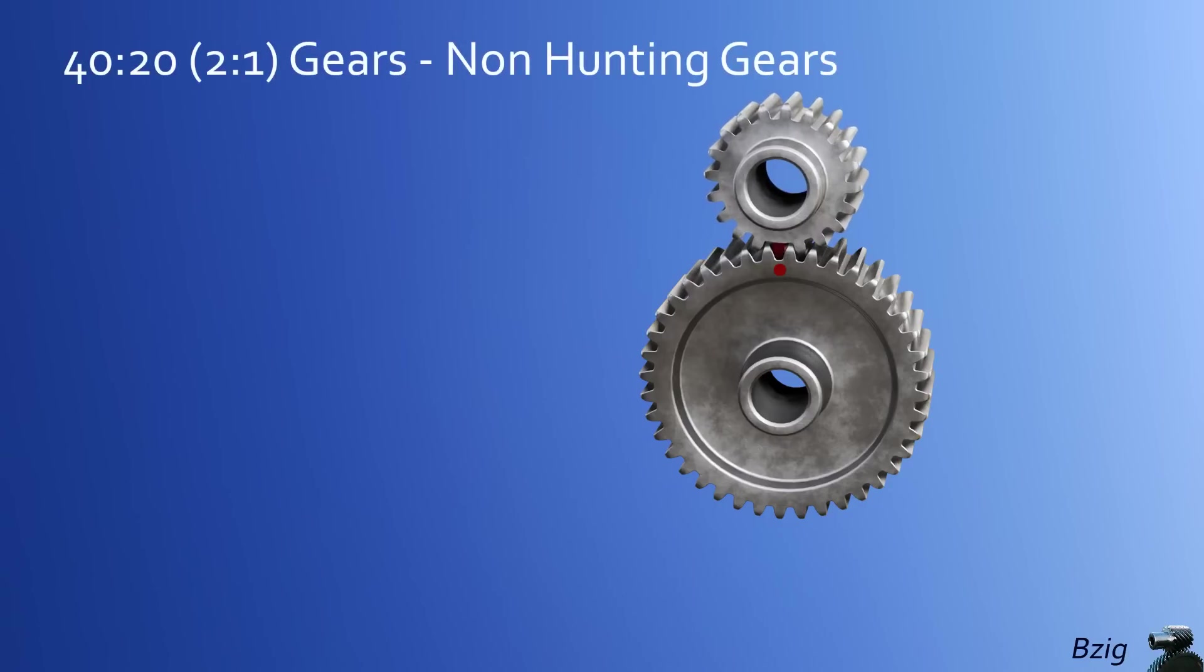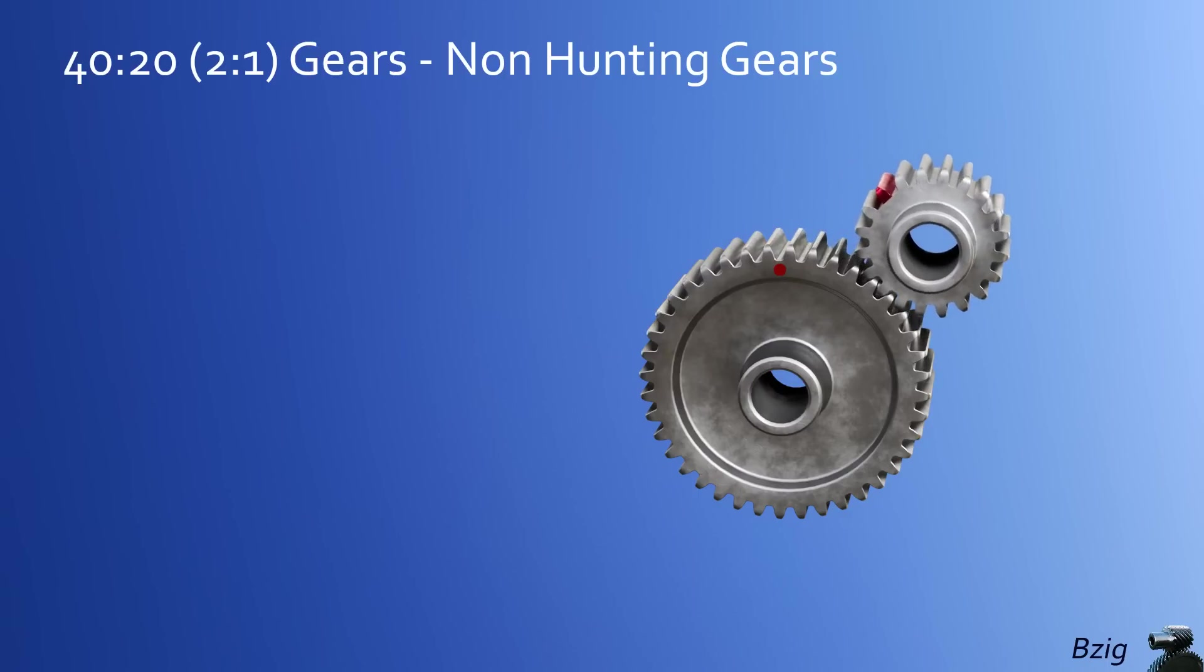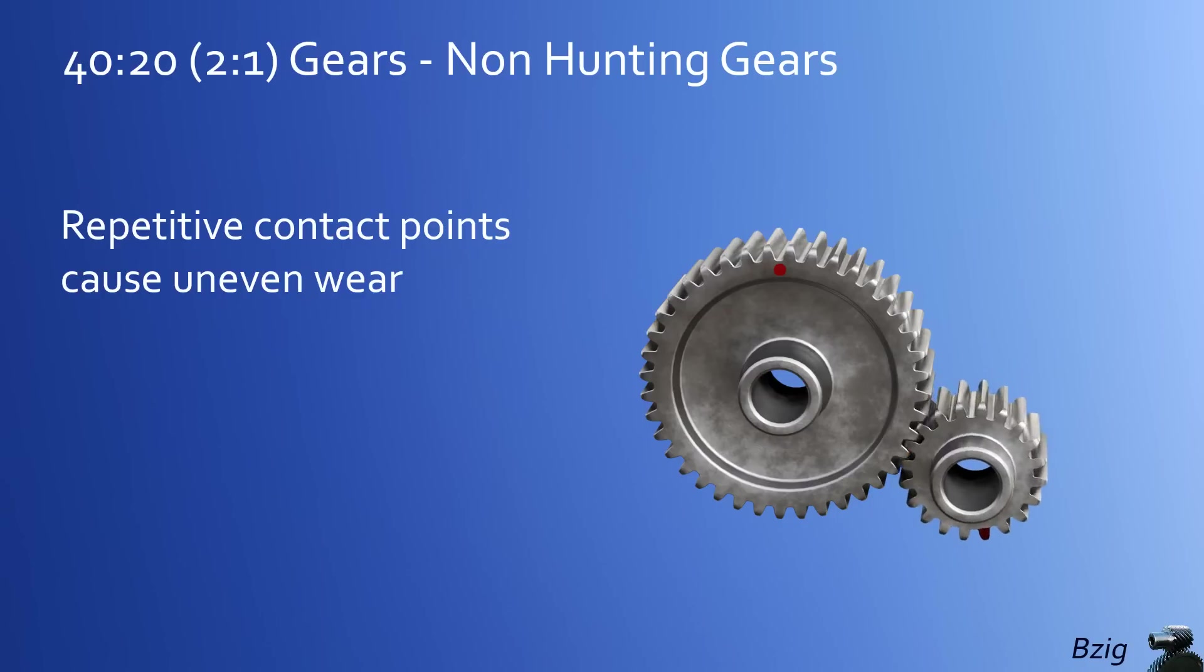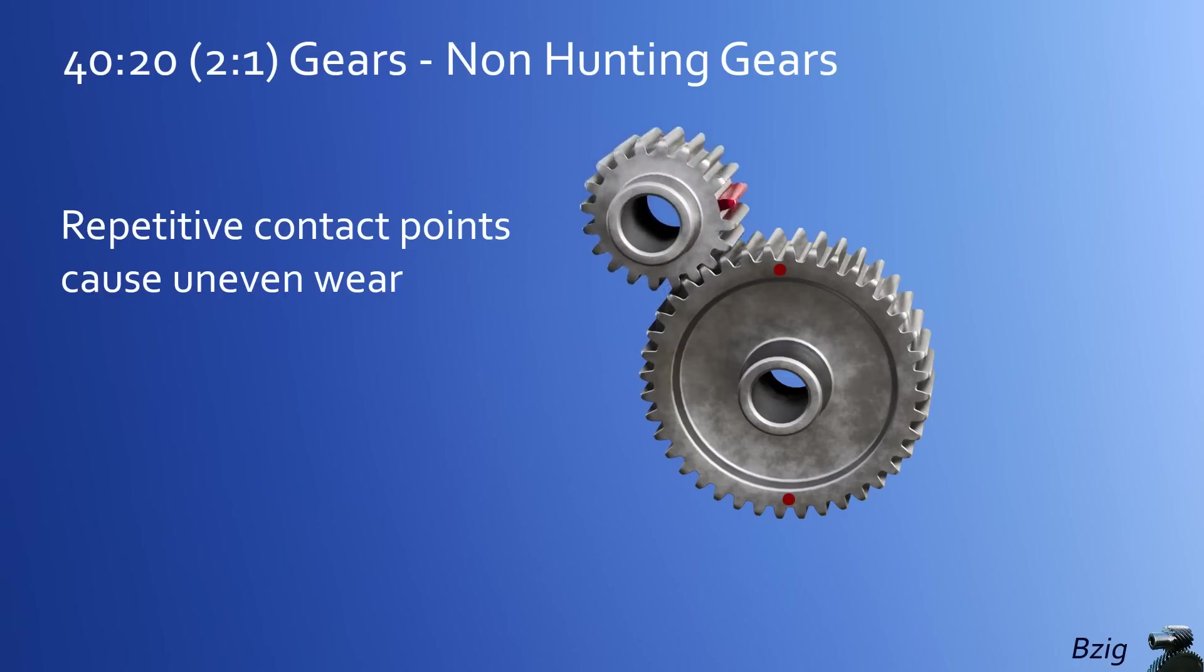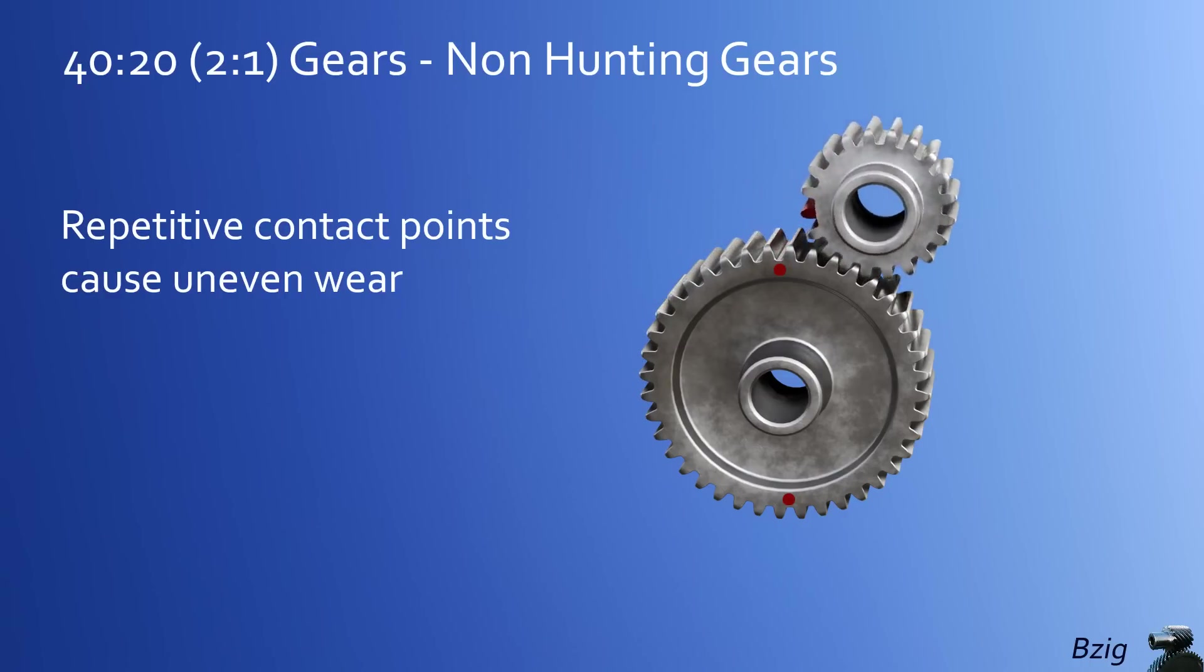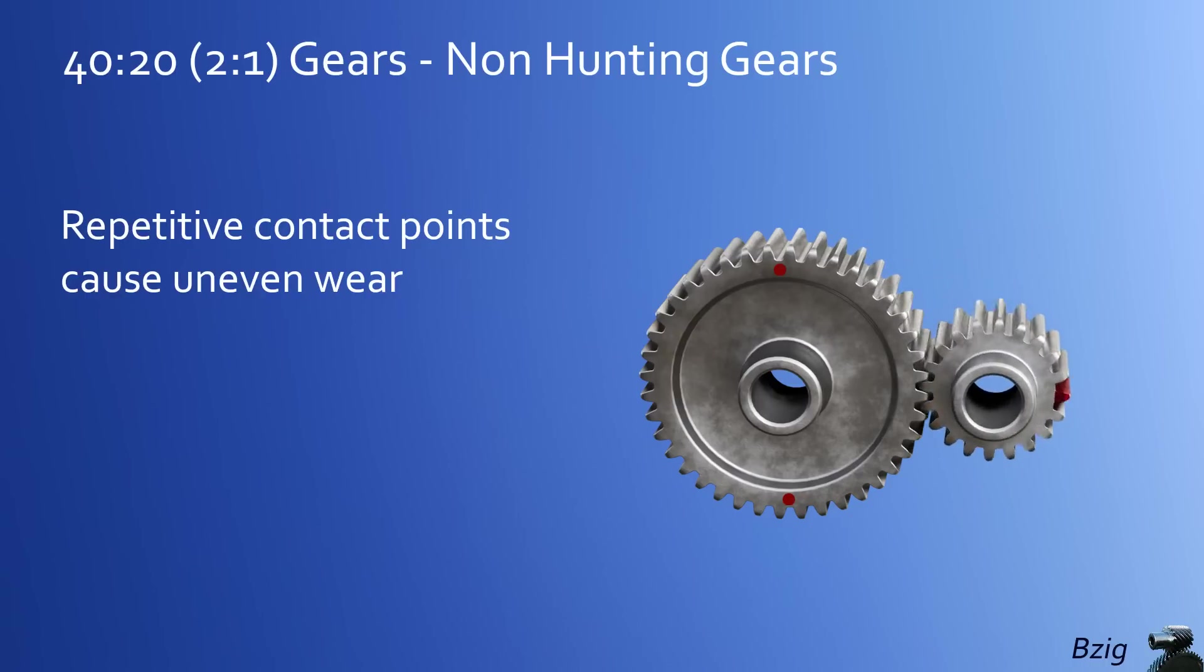I'll start adding these red contact points on the 40-tooth gear every time the red-colored tooth makes contact. And we start to see a repetitive pattern. The red tooth always contacts the same two teeth on the 40-tooth gear. And this isn't just an issue for this one red tooth. This issue applies to every tooth in this gear pair. Every tooth on the 20-tooth gear will mesh with the same two teeth on the 40-tooth gear.